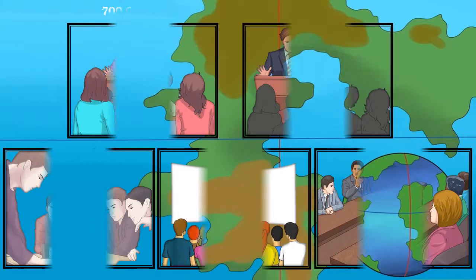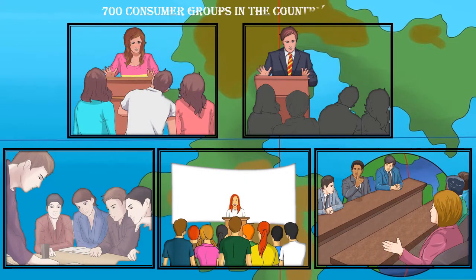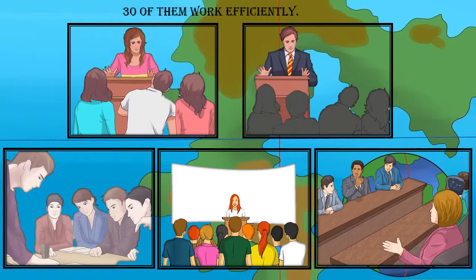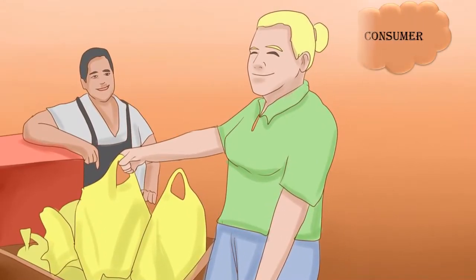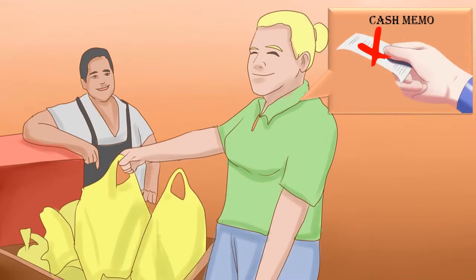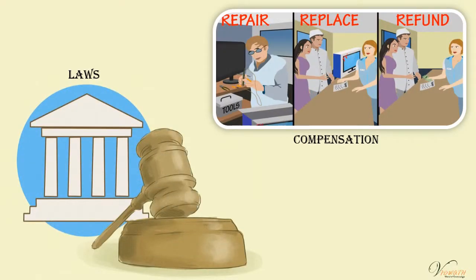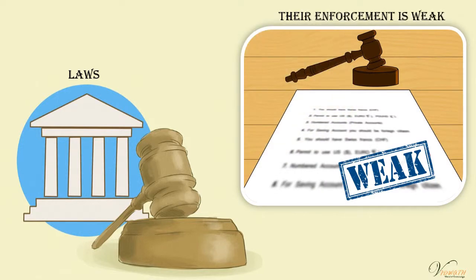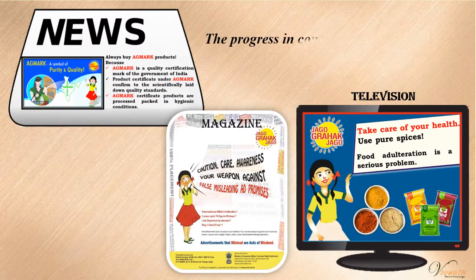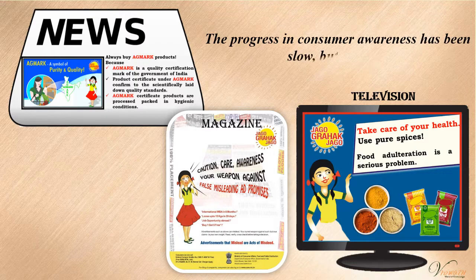There are over 700 consumer groups in the country, but only about 30 of them work efficiently. The process of redress might be difficult as consumers do not often take cash memos, making it very difficult to prove anything conclusively against the wrongdoings of shopkeepers. The laws relating to compensation are often vague, and their enforcement is also vague. The progress in consumer awareness has been slow but positive.